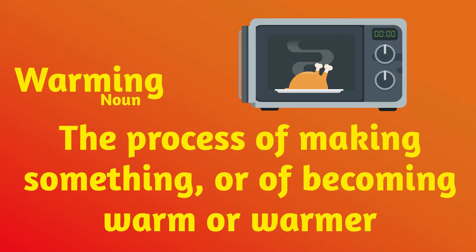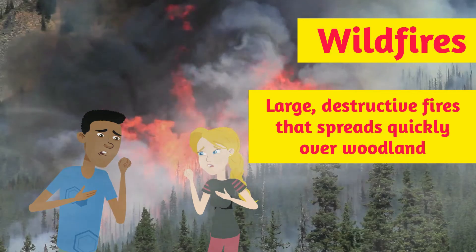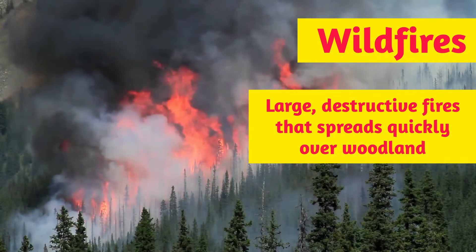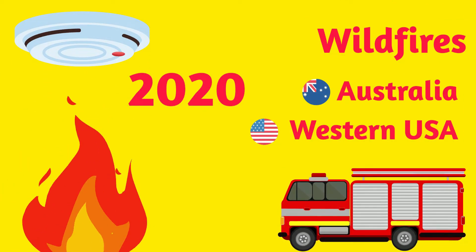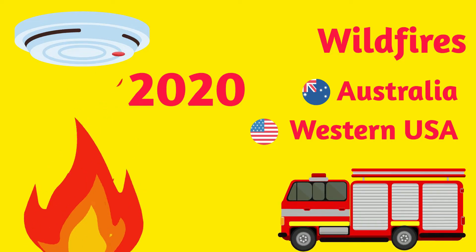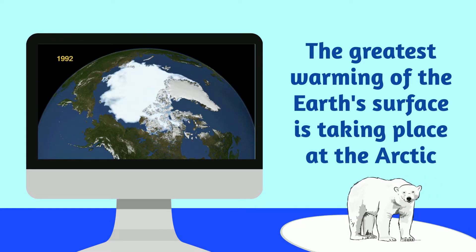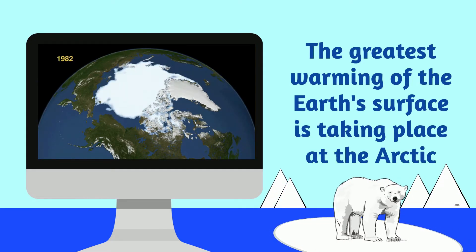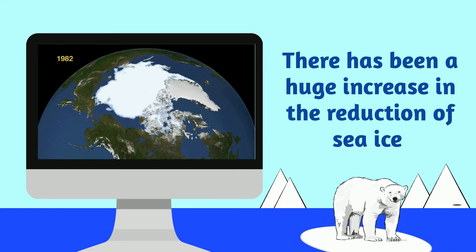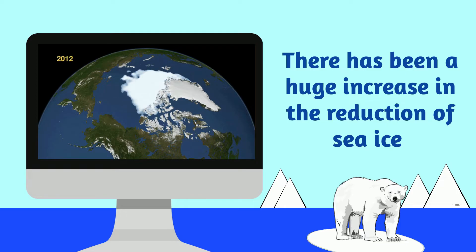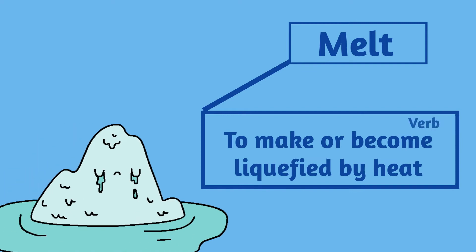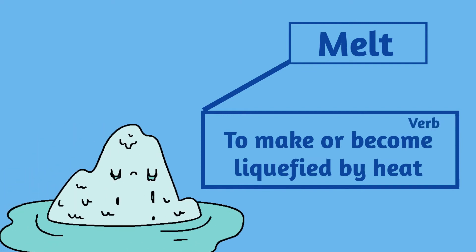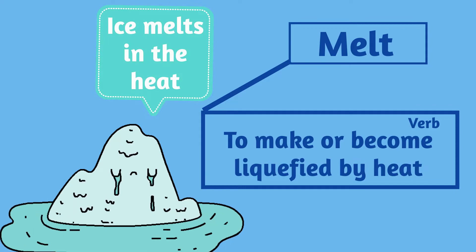So how is this warming affecting the earth? One way is wildfires — large destructive fires that spread quickly over woodland. In 2020 we saw massive wildfires in Australia and the western USA which were very devastating. The greatest warming of the earth's surface is taking place at the Arctic. There has been a huge increase in the reduction of sea ice. The word to melt means to make or become liquefied by heat — for example, ice melts in the heat.